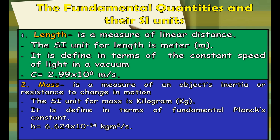The first SI base unit is length. Length is the measure of linear distance and has a unit of measurement of m, or meter. It is defined in terms of the constant speed of light in a vacuum, where c is equal to 2.99 times 10 raised to 8 meters per second.